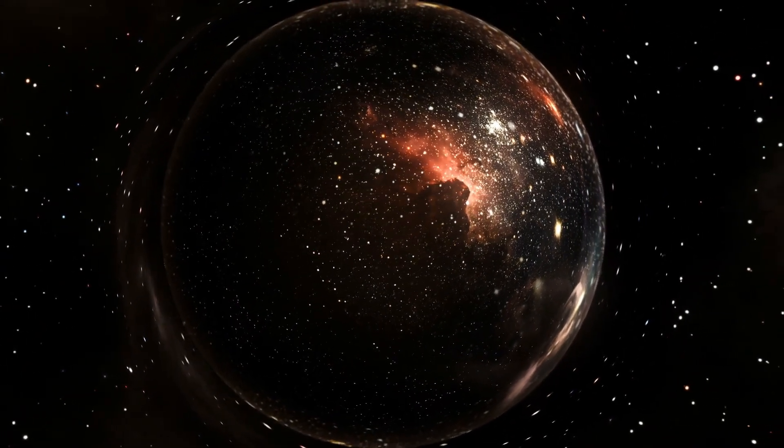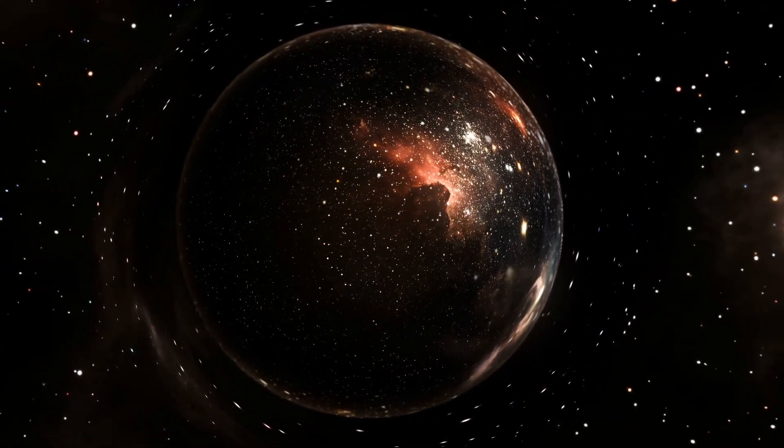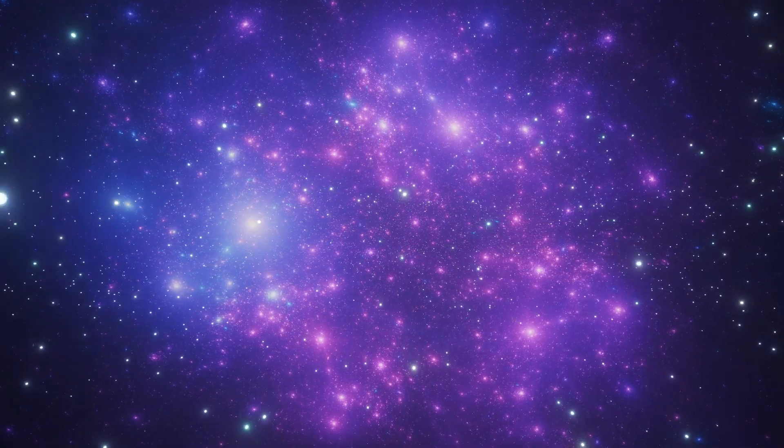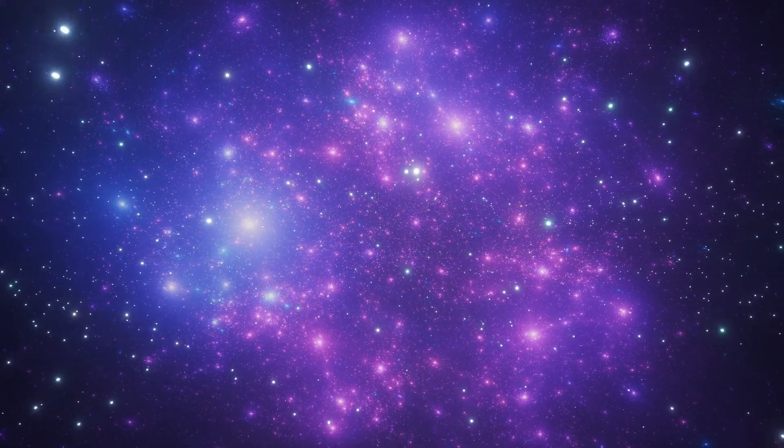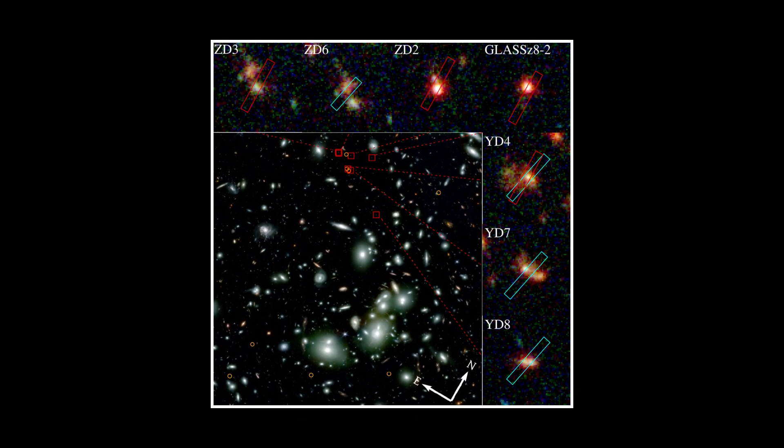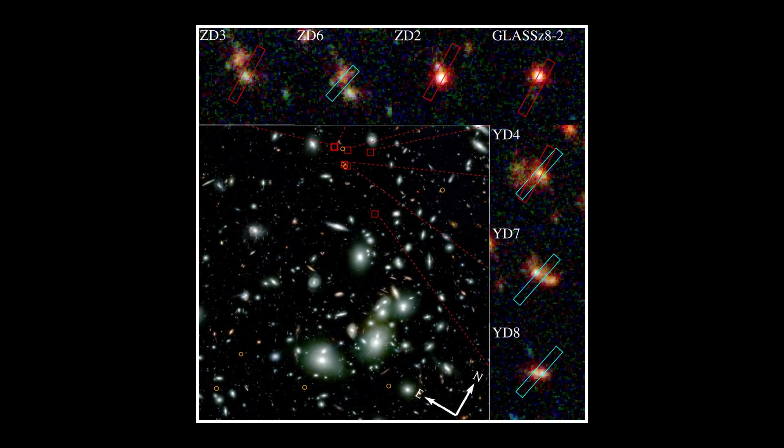Traditionally, when the Webb telescope observes deep into the universe, it should detect the first stars and galaxies at the edge. However, recent observations revealed many strange bright objects that do not appear to be early galaxies.